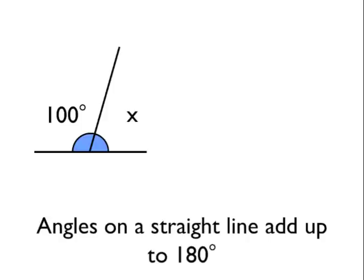Well, angles on a straight line add up to 180 degrees. So we can say that 100 plus X must be equal to 180.